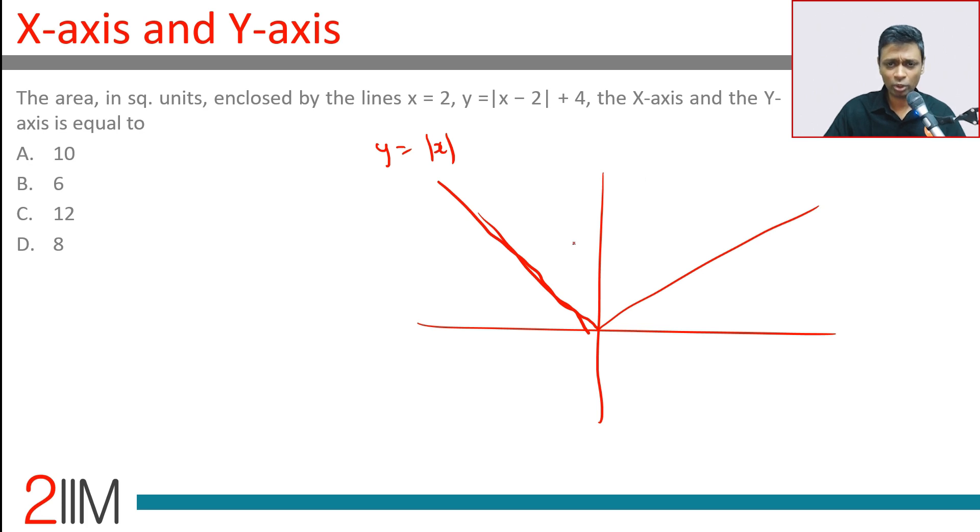Now I want to do y=|x-2|. Think about this: it will go to 0 when x is 2. This is nothing but shifting it to the right. y=|x| is like this, y=|x-2| will be like this.